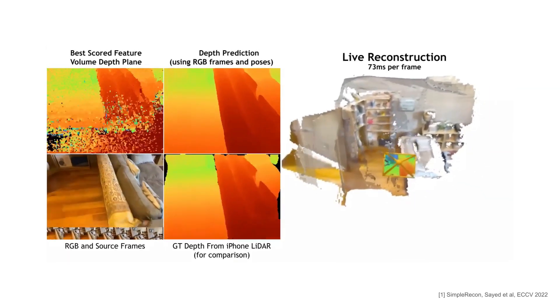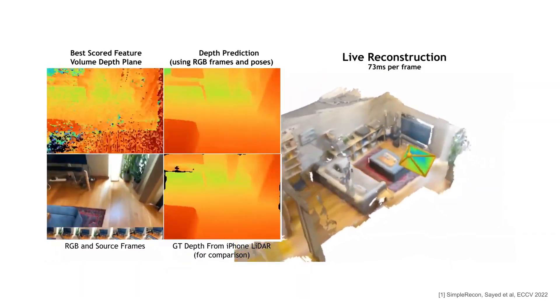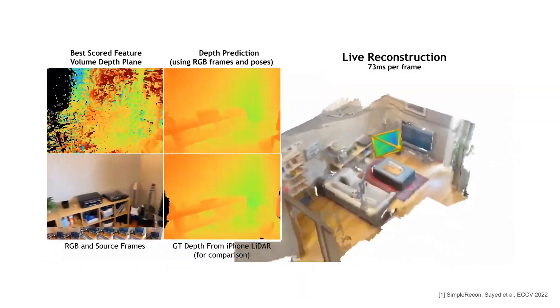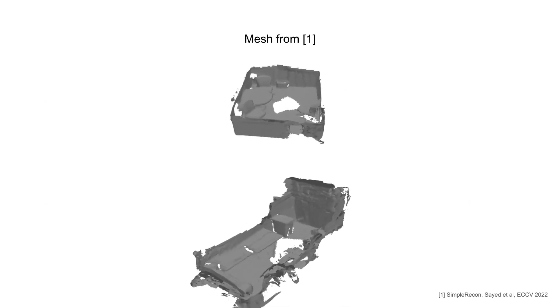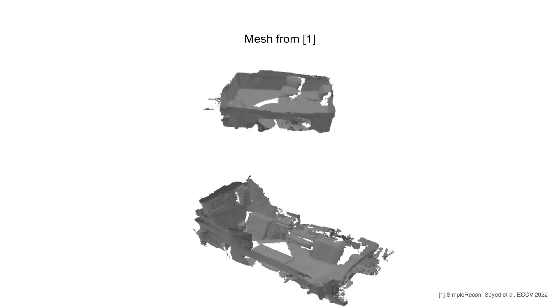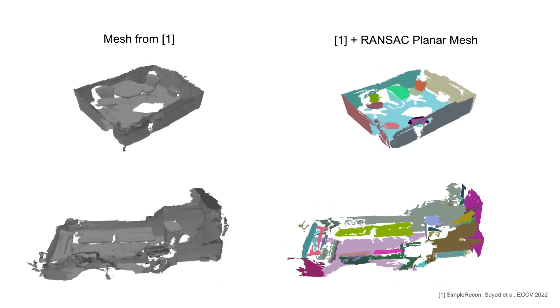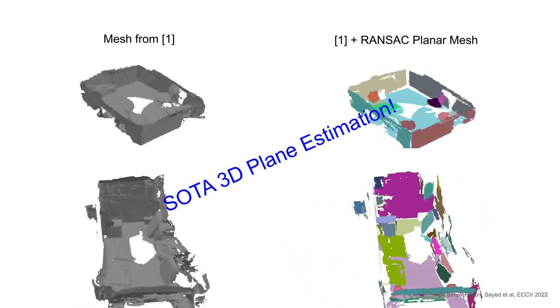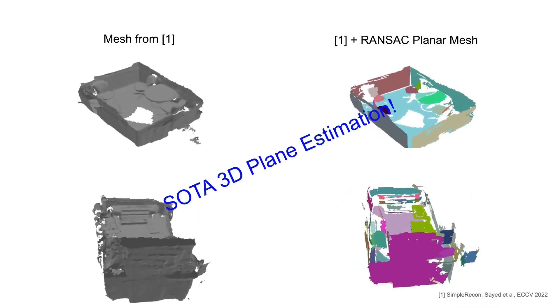Instead, for an initial estimate of the 3D geometry, we rely on existing state-of-the-art efficient methods for 3D reconstruction from RGB images. Given such a high-quality estimate of the 3D geometry of the scene, we ask the question: are traditional primitive fitting methods such as RANSAC competitive when used for 3D plane estimation? The answer is yes — using RANSAC on top of the predicted 3D geometry is not just competitive with existing methods, it achieves state-of-the-art results.